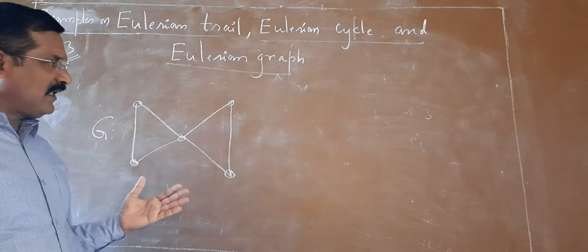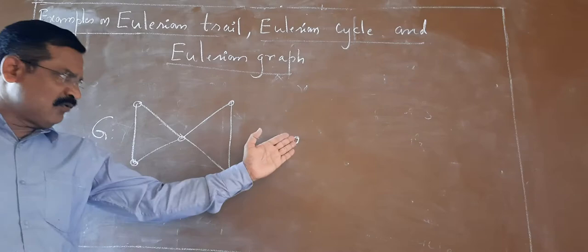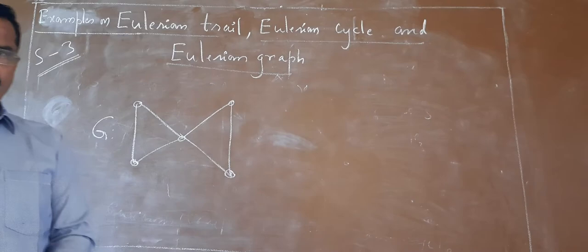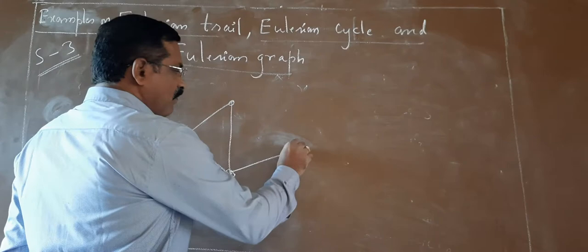Is it possible to get an isolated vertex in an Eulerian graph? No. If there is an isolated vertex, we cannot reach this vertex at all. So therefore, it is another observation that an Eulerian graph does not contain any isolated vertex. This is the second observation.